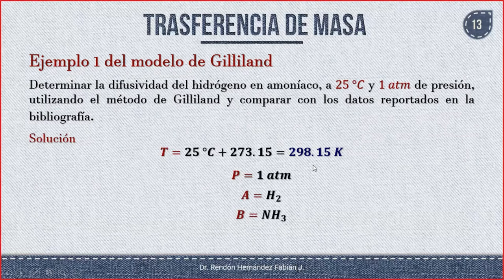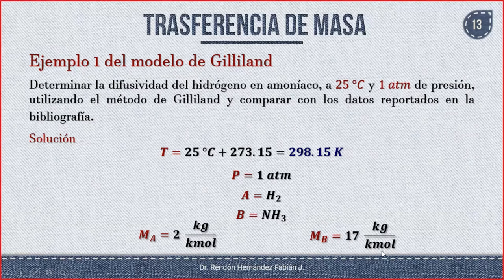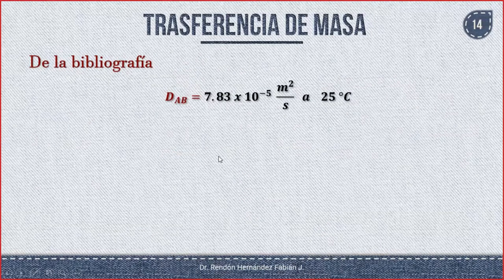Antes hay que conocer el valor reportado por la bibliografía. El peso molecular del hidrógeno, como es diatómico, son 2 kg/kmol. Para el amoníaco, el peso molecular del nitrógeno es 14 más 3, son 17 kg/kmol. De la bibliografía, la difusividad del hidrógeno en amoníaco es de 7.83×10⁻⁵ m²/s a 25 grados Celsius.